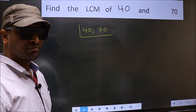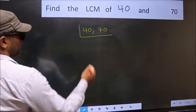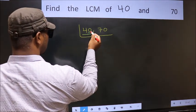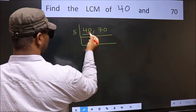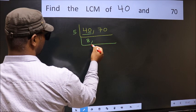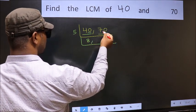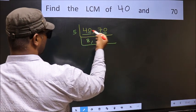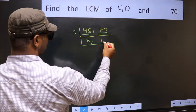Now you should focus on the first number, which is 40 here. For this number, last digit is 0, so directly take 5. When do we get 40 in the 5 table? 5 times 8 is 40. The other number 70 — last digit 0, so this is also divisible by 5. First number is 7.